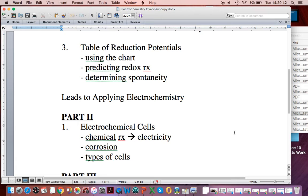In part two, we look at electrochemical cells. We look at how we can use chemical reactions to generate things like electricity, and sometimes we don't want those reactions to happen, like in the case of corrosion, but a lot of times we do like them to happen in terms of things like batteries.